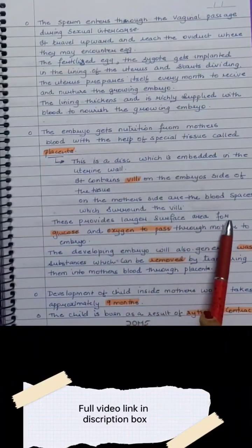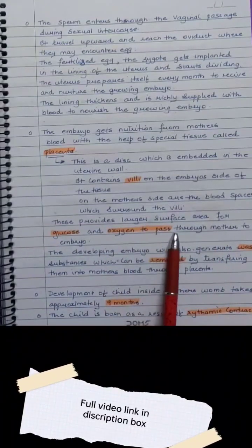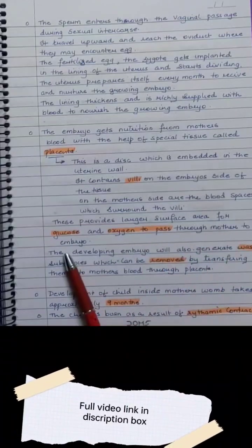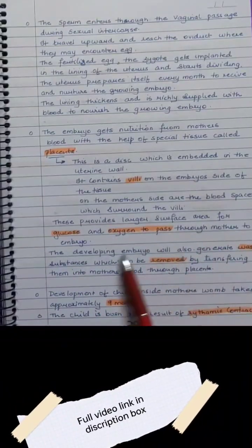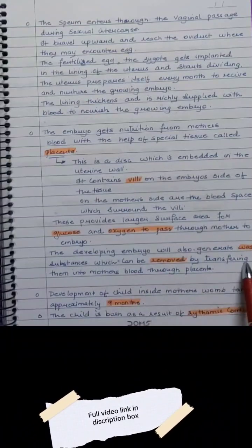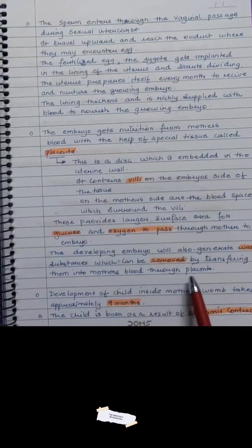This provides a larger surface area for glucose and oxygen to pass from mother to embryo. The developing embryo also generates waste substances which can be removed by transferring them into the mother's blood.